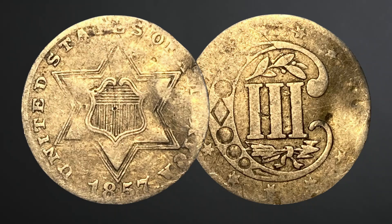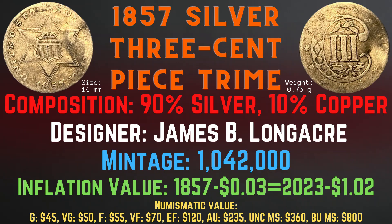Now we will take a look at the 1857 silver three-cent piece, also known as the trime. These coins are the smallest of all U.S. silver coins ever produced. It has a size of only 14 millimeters, a weight of 0.75 grams, a composition of 90% silver and 10% copper, and the designer was James B. Longacre. The mintage is only 1,042,000 and the inflation value is $1.02 for the year 1857. Numismatic values range from $45 in good condition up to $800 in brilliant uncirculated mint state condition.